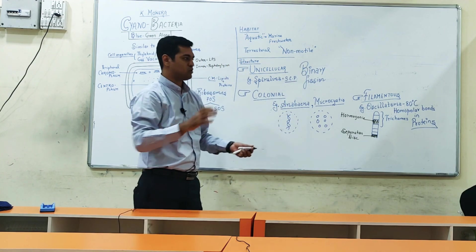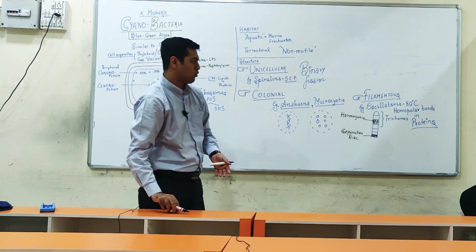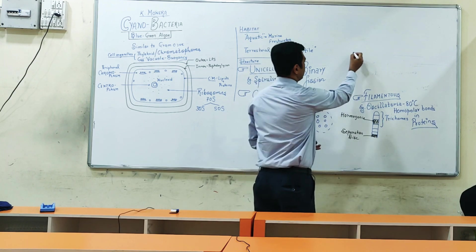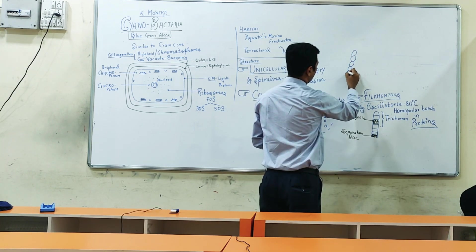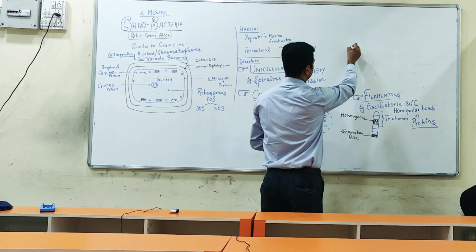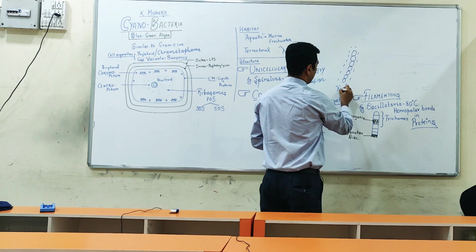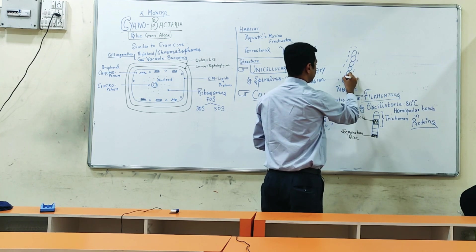This is seen in filamentous forms—separation disk or hormogonia formation. There are some other forms as well. In colonial forms, or those which have mucilaginous sheath around them like Nostoc, a special cell can be formed in which the cell wall develops a thickening.